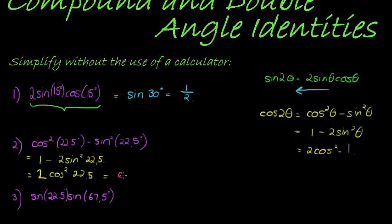So this is the same as cos of double 22.5, which is 45. Okay, and I know already that this is the square root of 2 over 2.